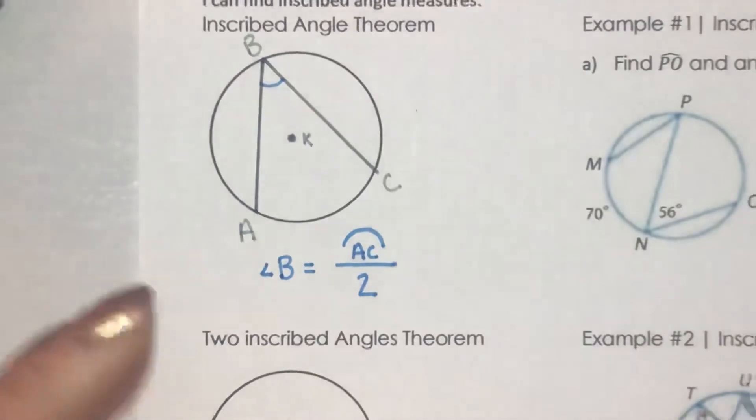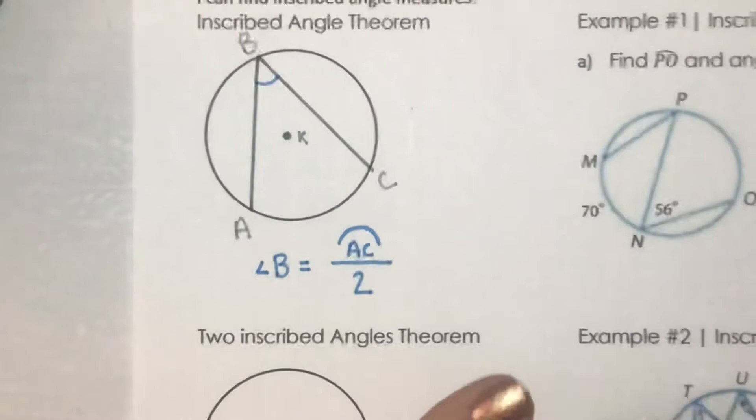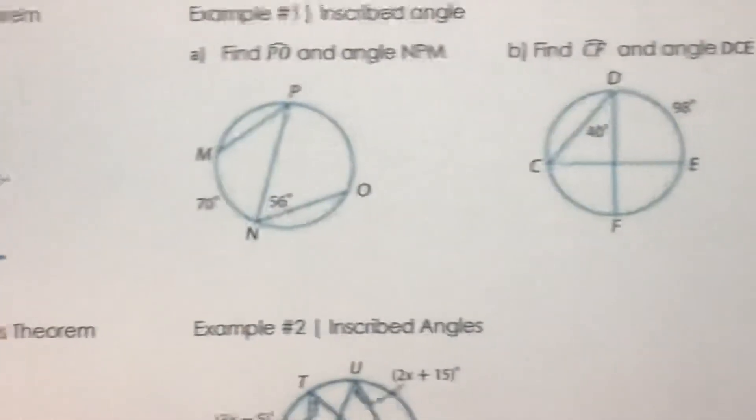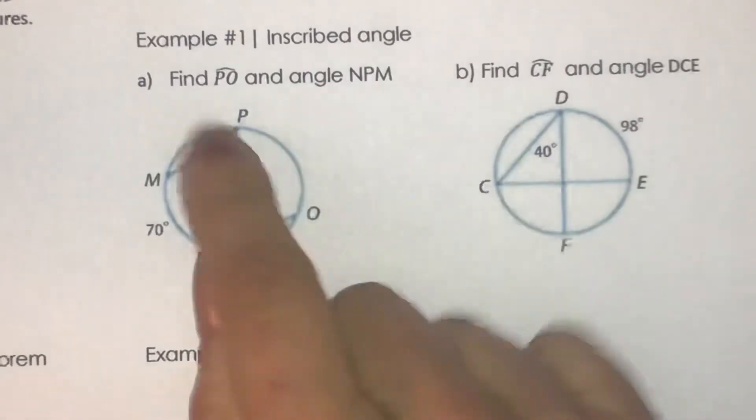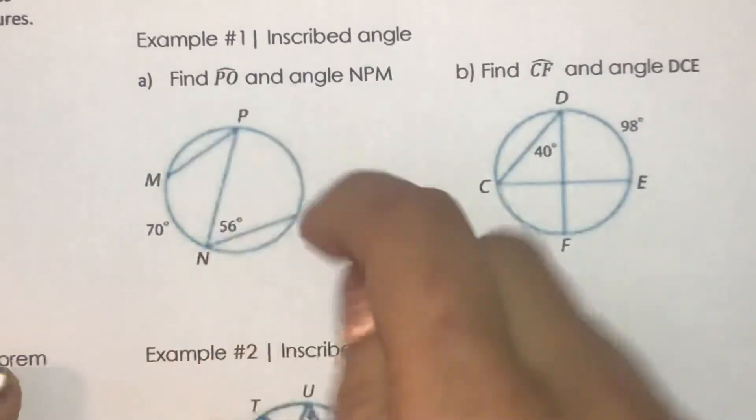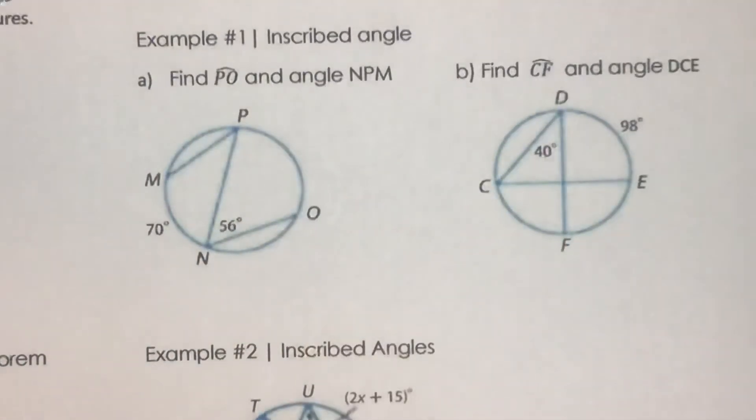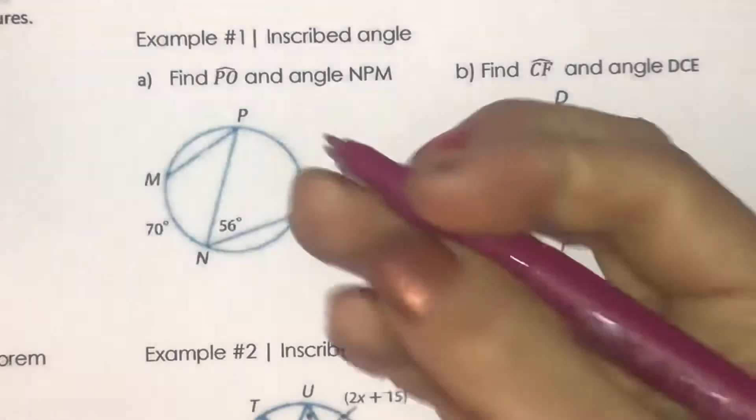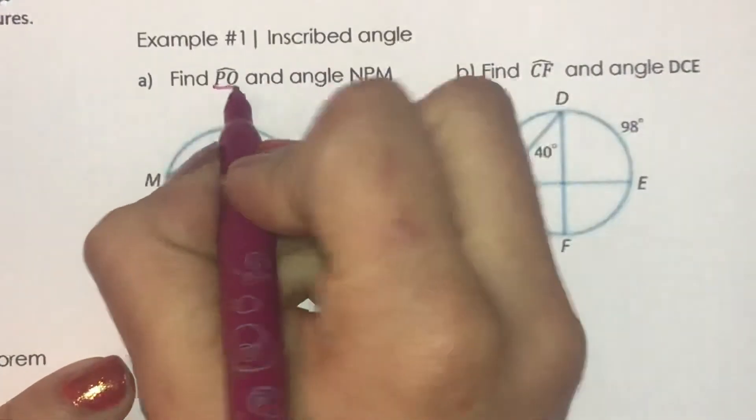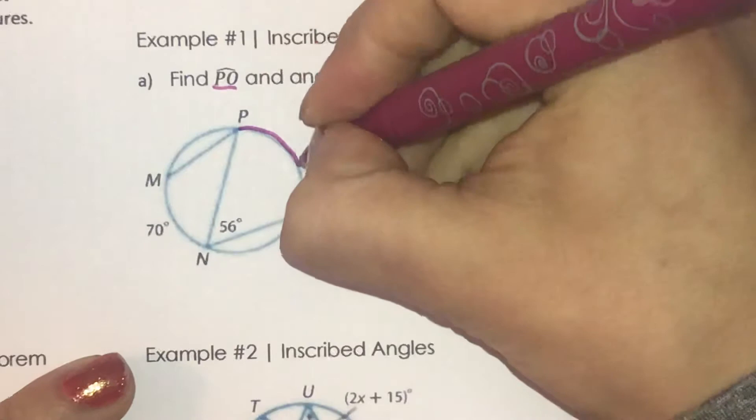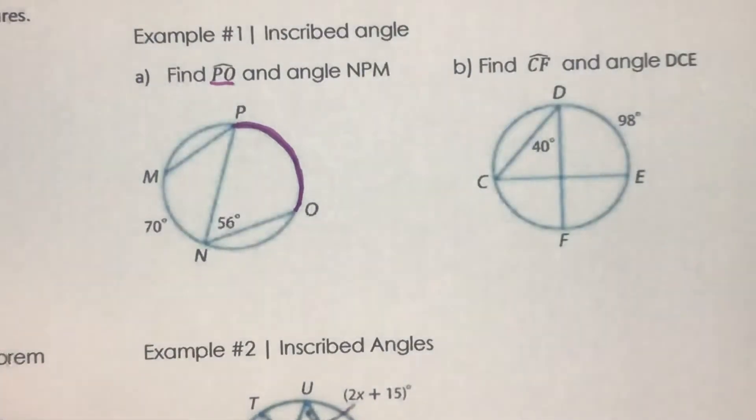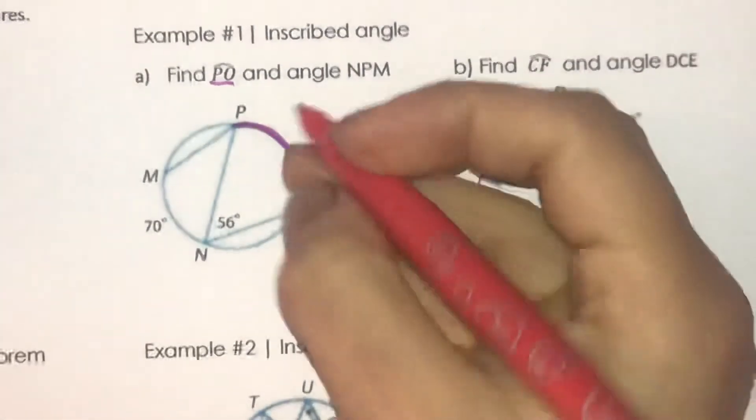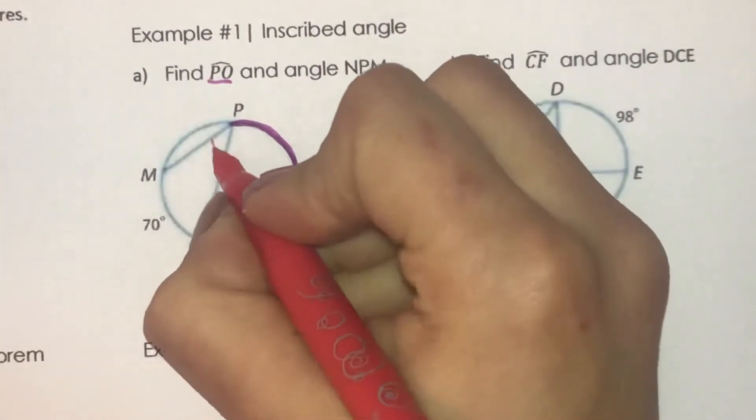Okay, so let's take a look at some examples here. Example number one, inscribed angle. We're going to find arc PO, so arc PO and angle NPM. So PO is here. So what we need to do, angle NPM is here.